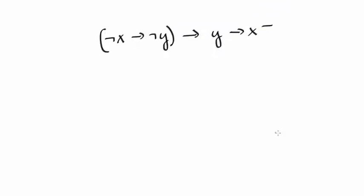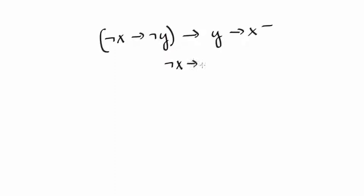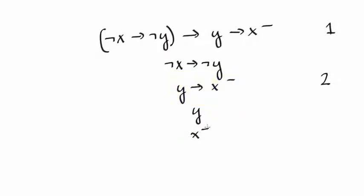We apply the tableau rule for negative implication. Recall that the tableau rule for negative implication: s implies t minus, adds s plus and t minus. Here we add not x implies not y plus and y implies x minus. We typically don't write the plus — if it's a positive formula we omit the sign and assume it's positive. Applying the negative implication rule to y implies x minus, we add y plus and x minus.